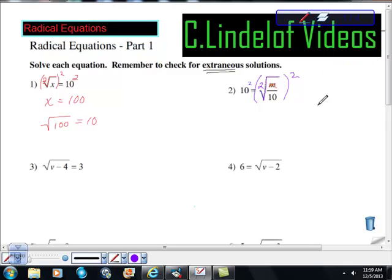So just something to think about why that works. So, again, we get 100 is equal to M over 10. Now just some algebra, right?